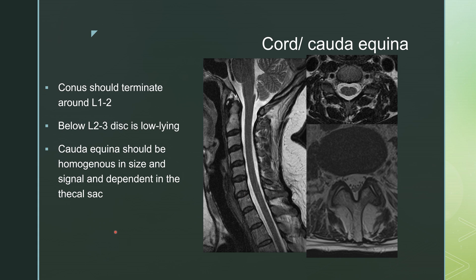C stands for cord or cauda equina. The conus should terminate around L1-2; below L2-3 is considered low-lying. The cauda equina should be homogeneous in size and signal and be dependent in the thecal sac when somebody's lying on their back. You should see a little bit of CSF between each of these — I like to say spaghetti strings — and they should fall back. The cord should be homogeneous in signal as well and have a nice oval shape.